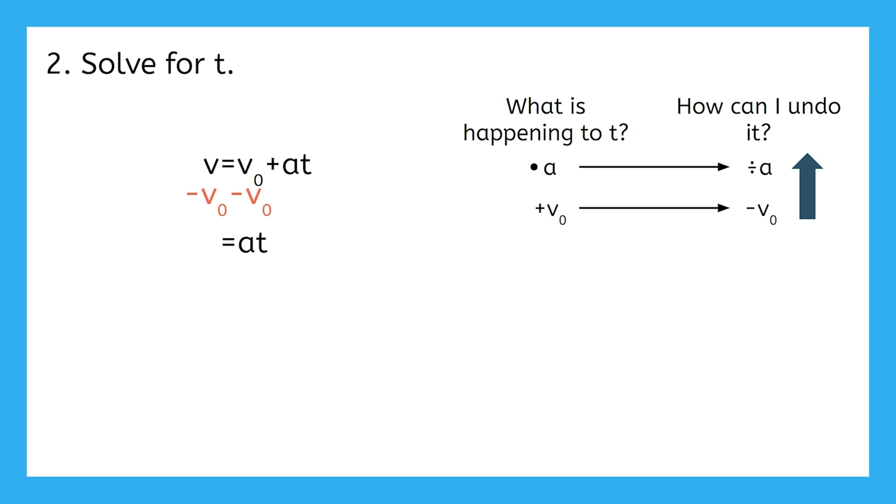This is just going to stay as V minus V0. Now all that's left is to get rid of the A to get to the T by itself. So how can I do that?